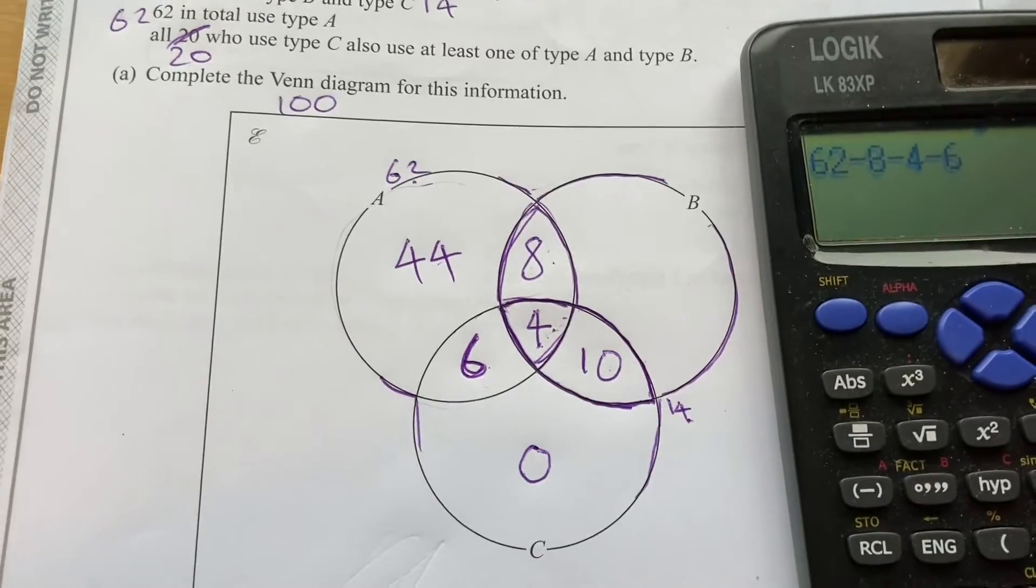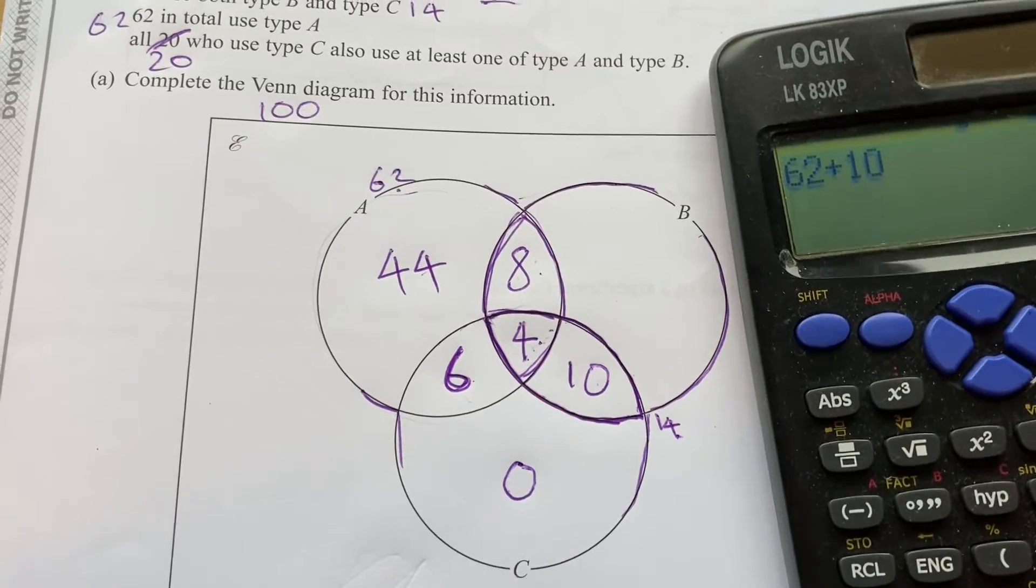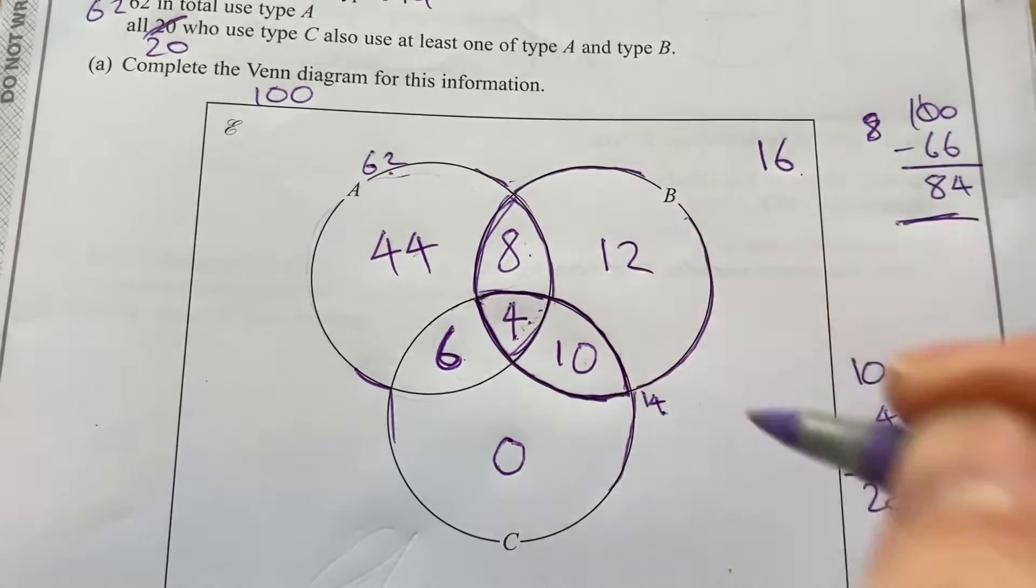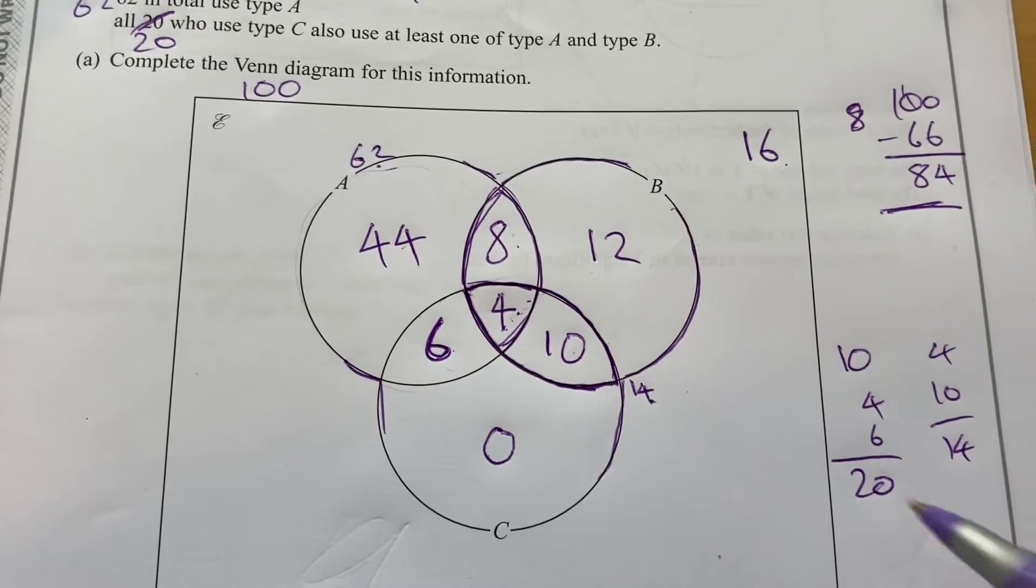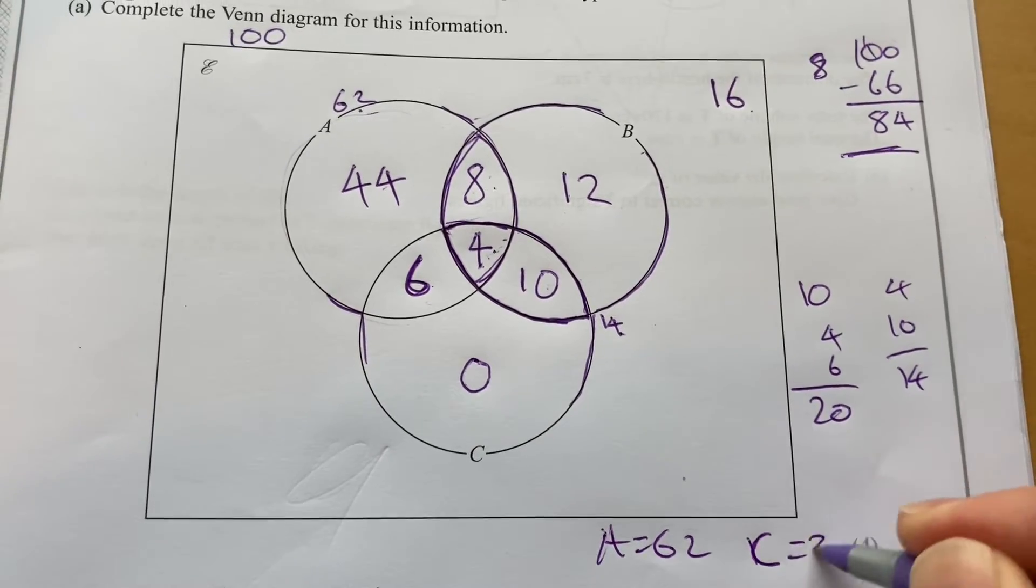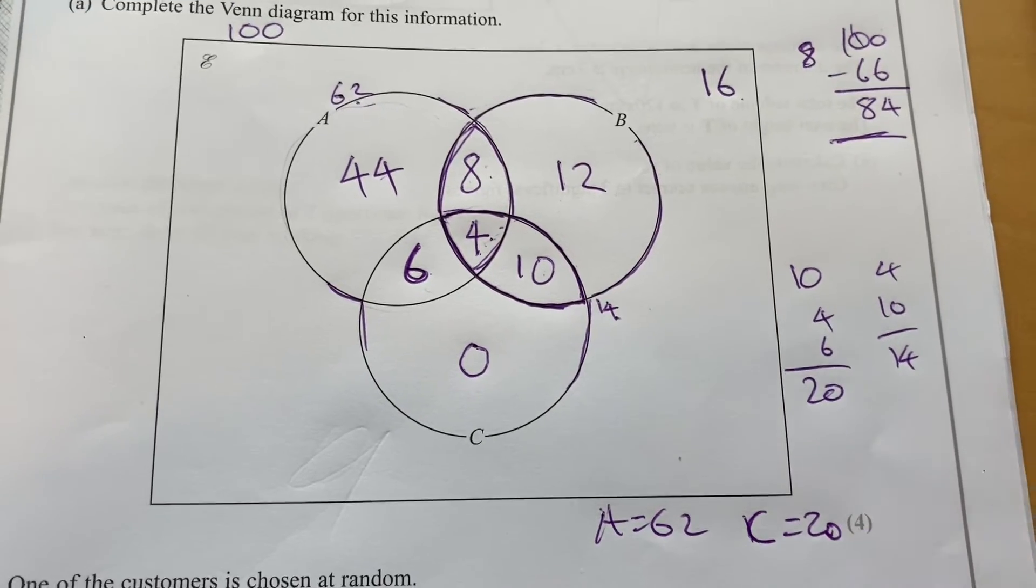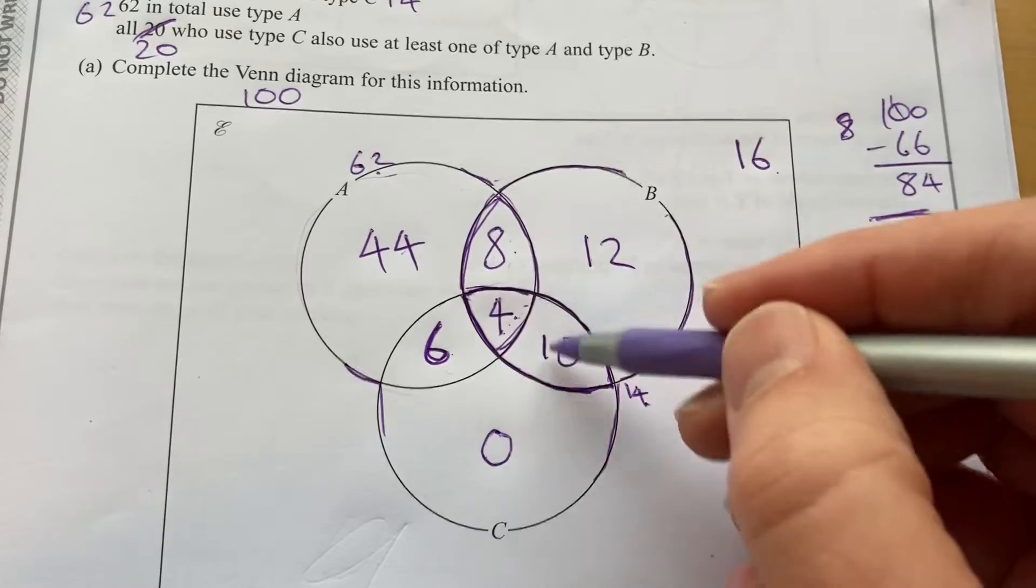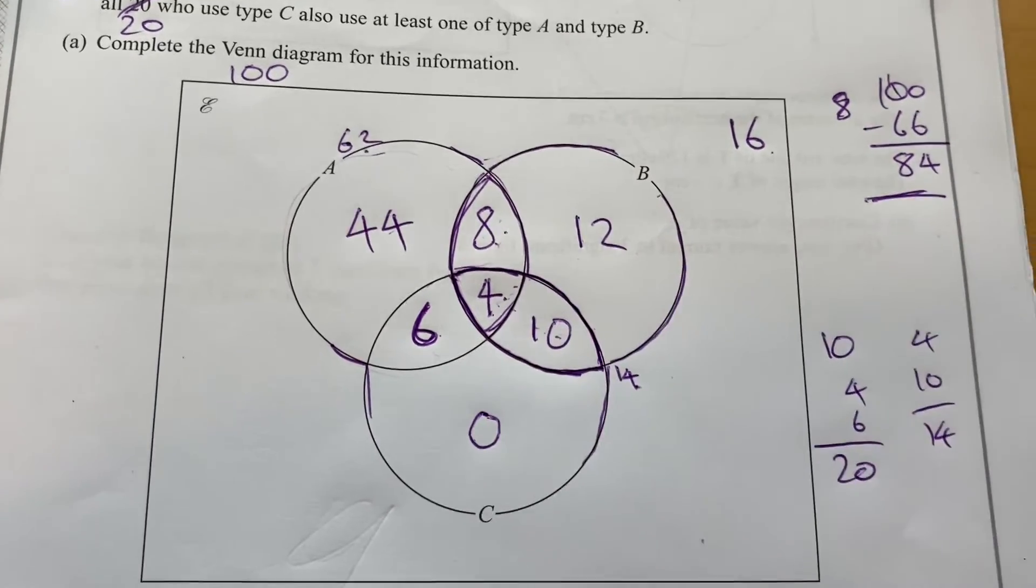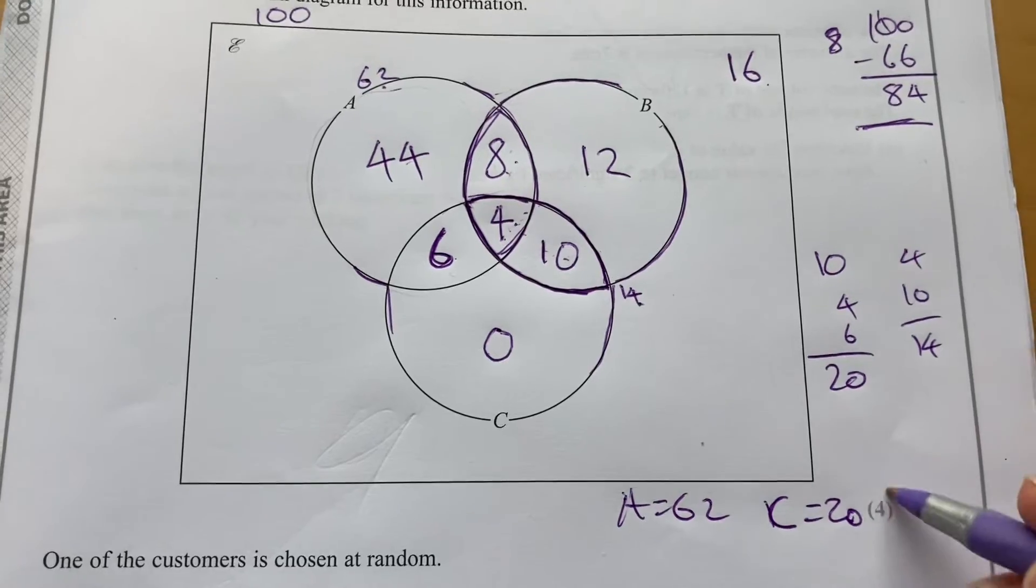Now we know the whole thing needs to add up to 84. So if I've got 62 in A, plus these 10, that's 72. I only need 12 to be there. So then A's total is 62, C's total is 20, but obviously there's overlap between those two. I need to know that some of them are overlapping. So there we go. I've filled in every section using all that information.